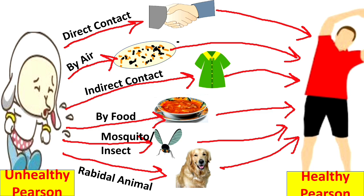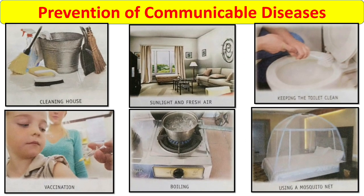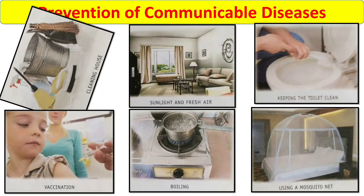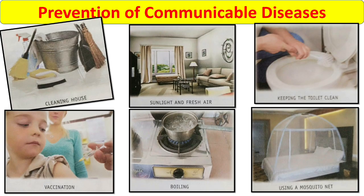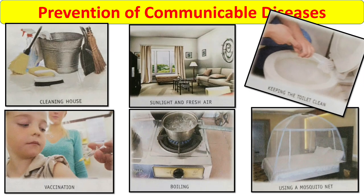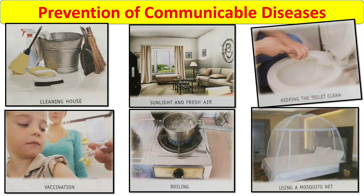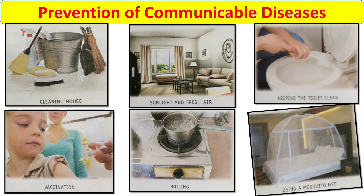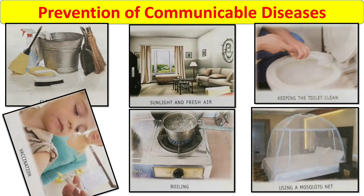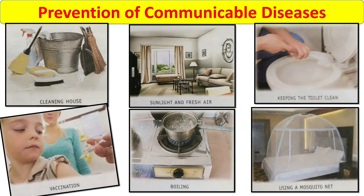Now, what are the preventions for communicable disease? We should make efforts to prevent the breeding of germs. Houses should be kept clean, airy, and open — fresh air and sunlight are natural disinfectants. A supply of clean, germ-free water for drinking and cooking is essential. Toilets and bathrooms must be cleaned and disinfected regularly. Use a mosquito net or mosquito repellent at night. Most importantly, vaccination is another way of protecting yourself by acquiring immunity against certain diseases. We must get ourselves vaccinated as a protection against these diseases.